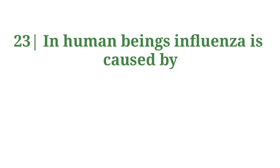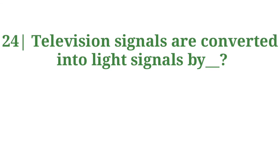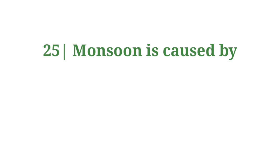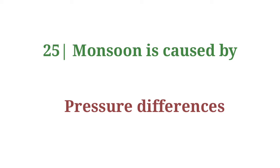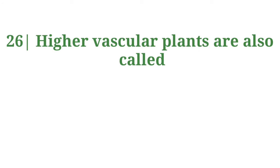Influenza is caused by a virus. Television signals are converted into light signals by a photodiode. Monsoon is caused by pressure difference. Higher vascular plants are also called seed plants.